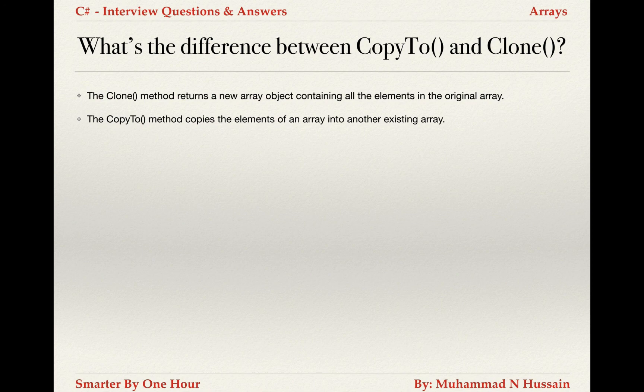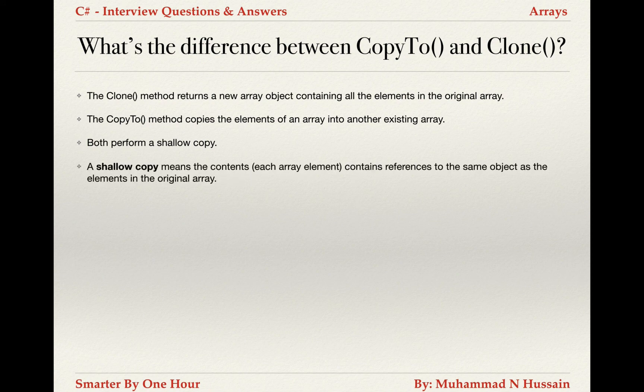Both perform a shallow copy. This means that in the case of reference types, only the references are copied — the objects to which they refer are not copied. So a shallow copy means the contents contain references to the same objects as the elements in the original array.